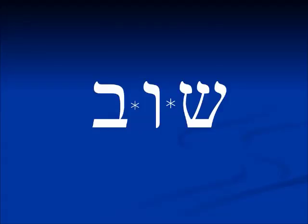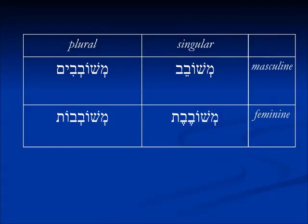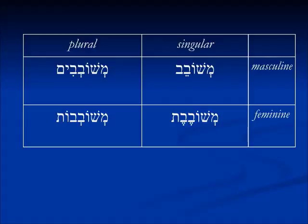Here's the root shuv, which in the Pa'al means 'to return.' In the participle, rather than ma-shov or ma-shuv or something like that, we get mishavev — the last letter of the root doubles in this form. The feminine form is mishavevet, recognizable as a feminine form. Plural forms are mishavevim and mishavevot.